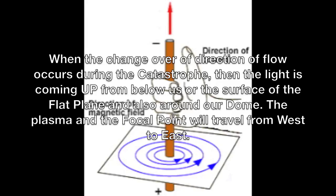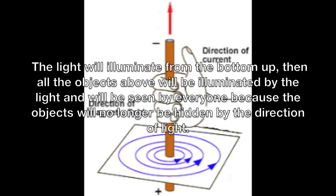When the changeover of direction of flow occurs during the catastrophe, the light is coming up from below us or the surface of the flat plane and also around our dome. The plasma and the focal point will travel from west to east. The light will illuminate from the bottom up, then all the objects above will be illuminated by the light and will be seen by everyone, because the objects will no longer be hidden by the direction of light.